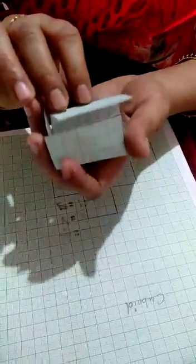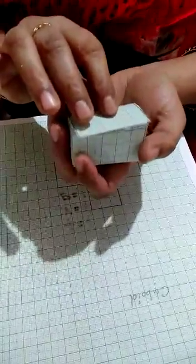Cut off and take the paper cutting off this. This is the net of a cuboid. Fold it in the shape of a solid. Now, this is a cuboid.